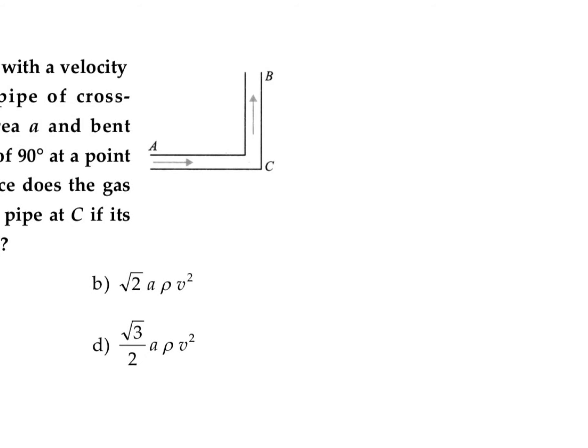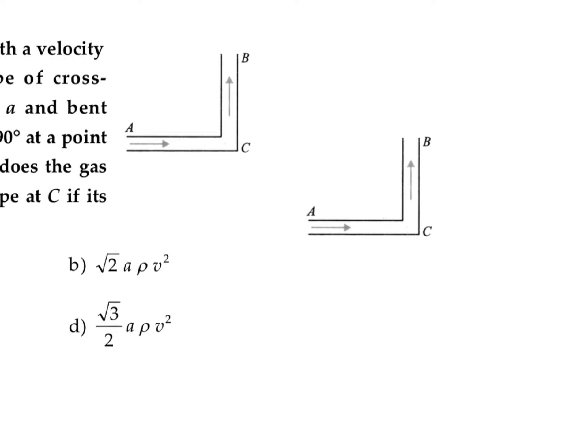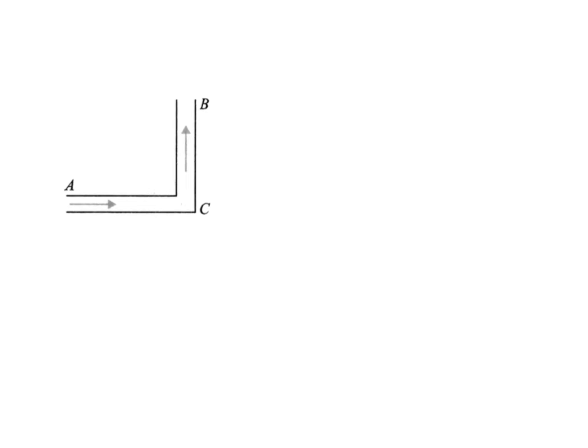We can use the concept that the force exerted by the container or pipe on the liquid will be equal to the force exerted by the liquid on the container. We know that force is equal to rate of change of momentum, so we are going to find this using the equation dp by dt.